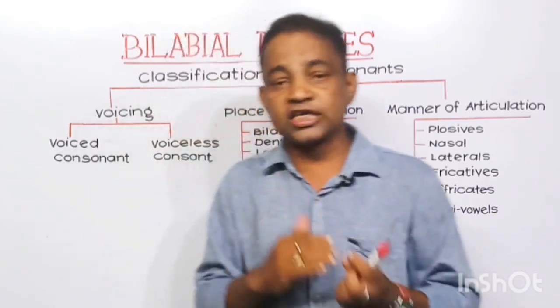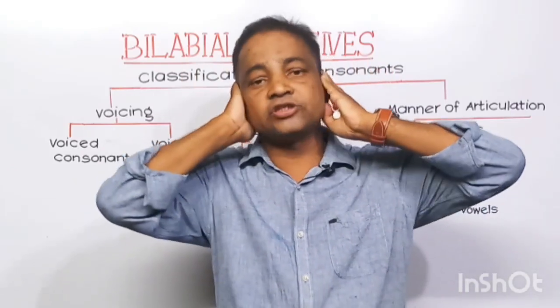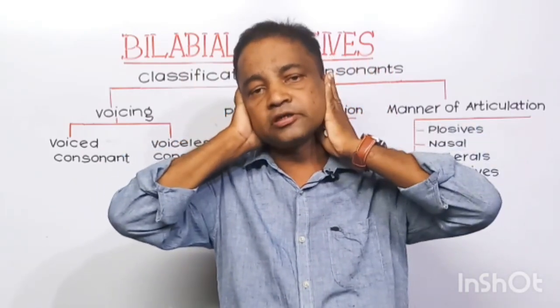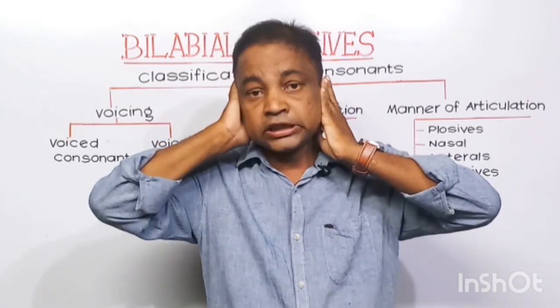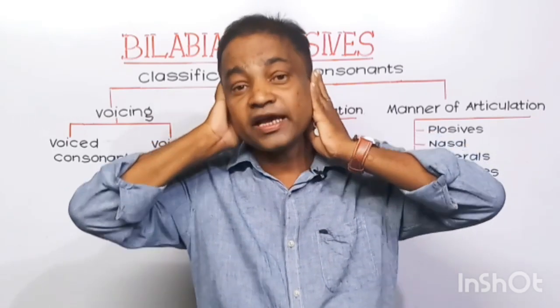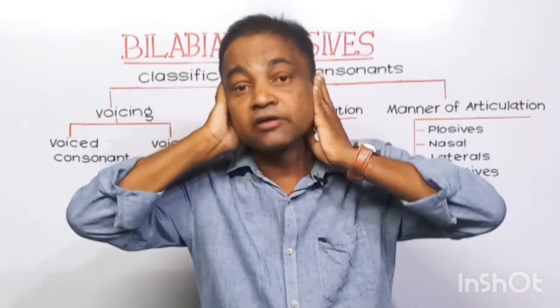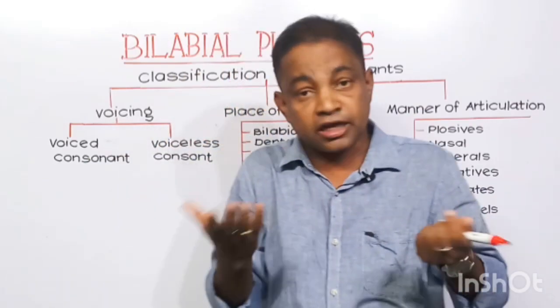For example, put your palms on your ears and try to produce the sound PAH. Do you feel any vibration? No, because vocal chords do not vibrate here. But when you produce the sound BAH, there is vibration, because your vocal chords vibrate. So P is a voiceless sound, whereas B is a voiced sound.